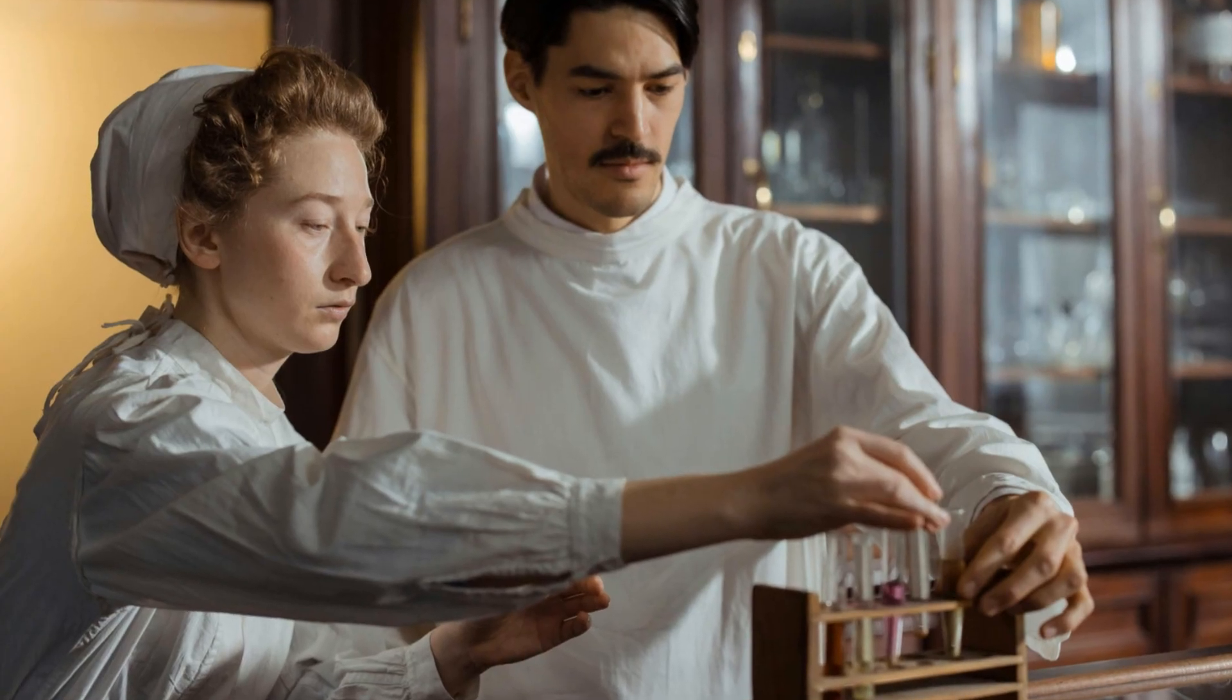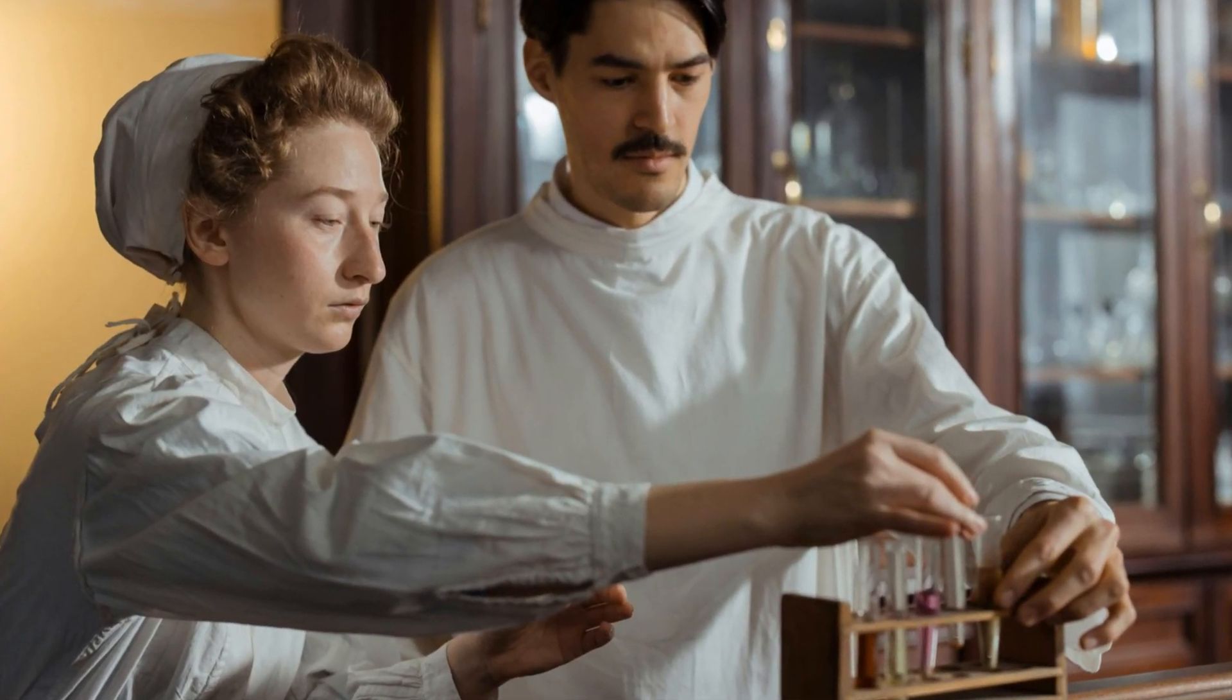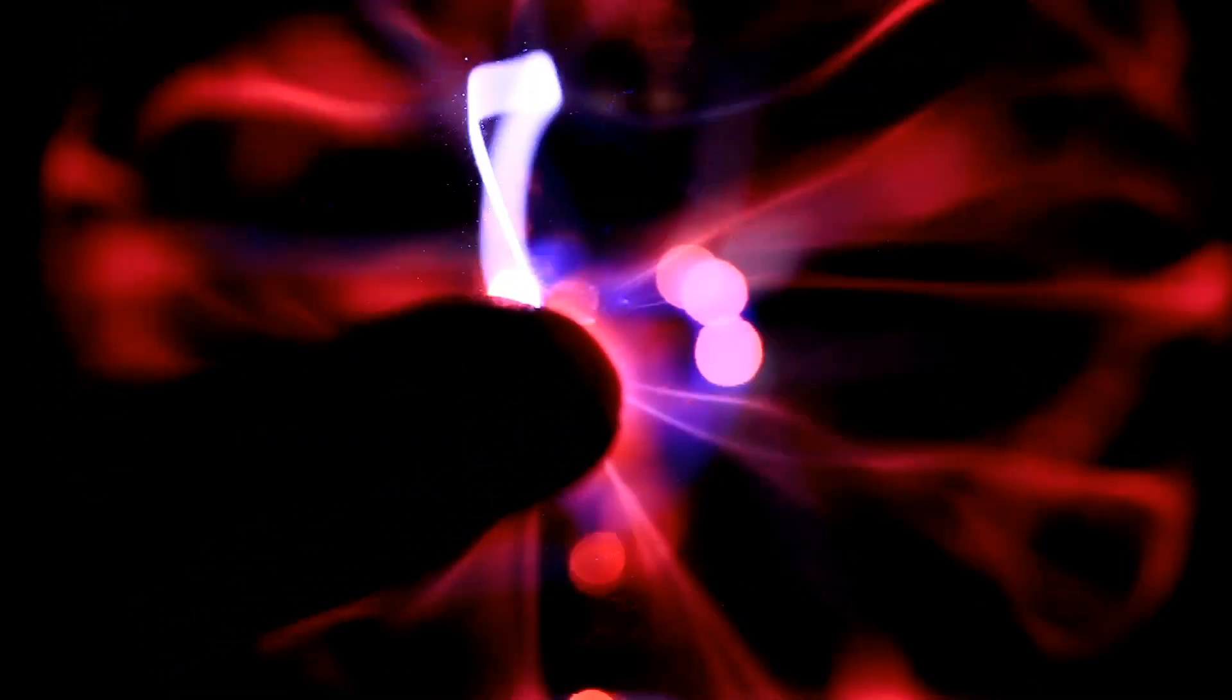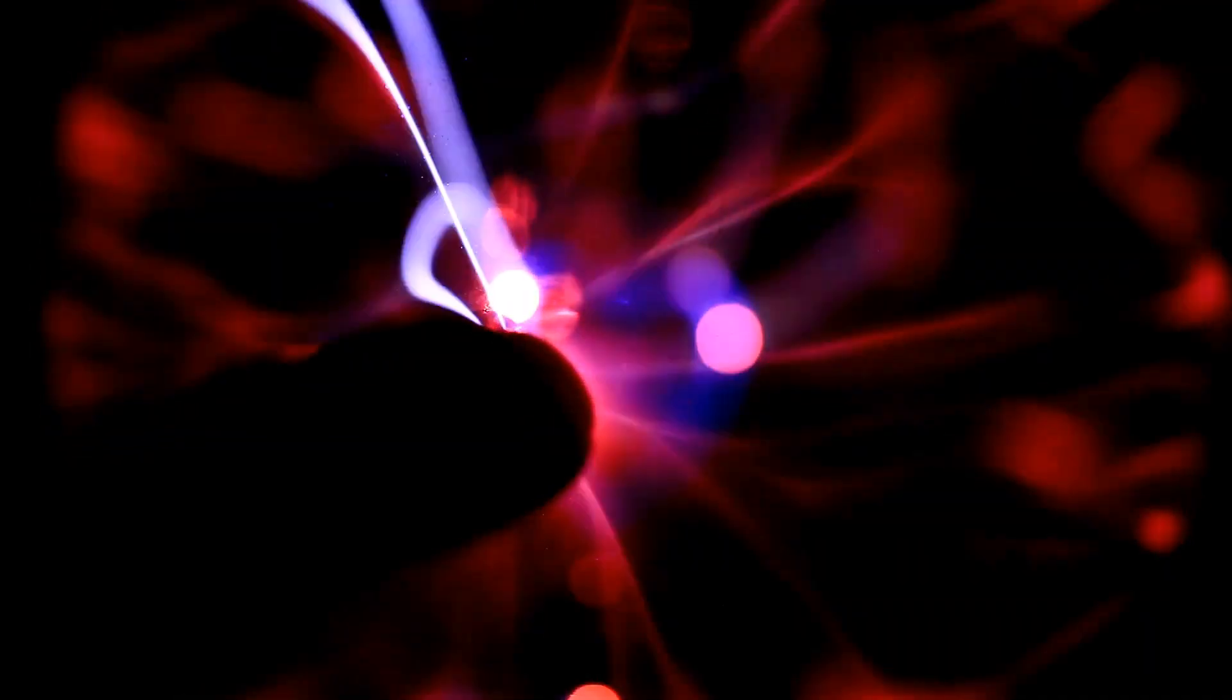But in the early 20th century, scientists realized this wave behavior wasn't just for light. When electrons, tiny particles of matter, were fired one at a time through the slits, they still created an interference pattern, behaving like waves.